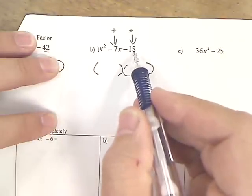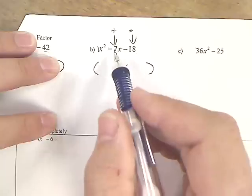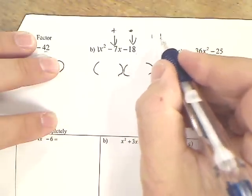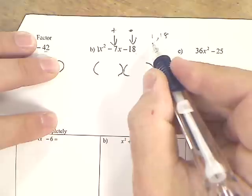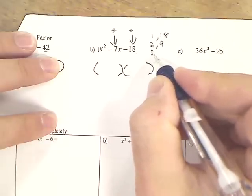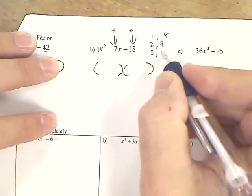So what are two numbers that multiply together would be negative 18 and add together would be 7? So if you really struggle with it, make a list. 1 and 18 multiplied together would be 18, 2 and 9 and 3 and 6.